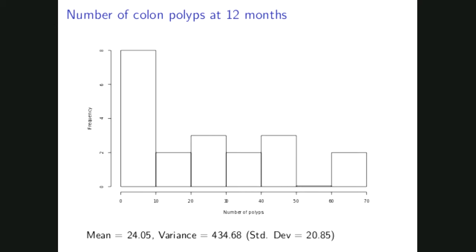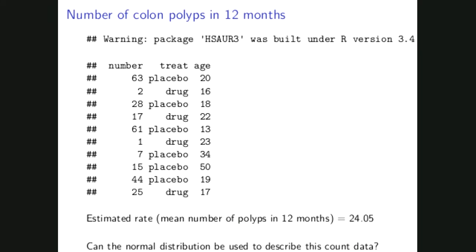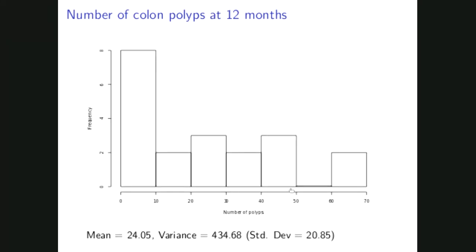Usually when certain conditions are satisfied, like in this case if the mean is bigger than 20, we can apply the normal distribution. Normal distribution will just give you approximation to this Poisson distribution.